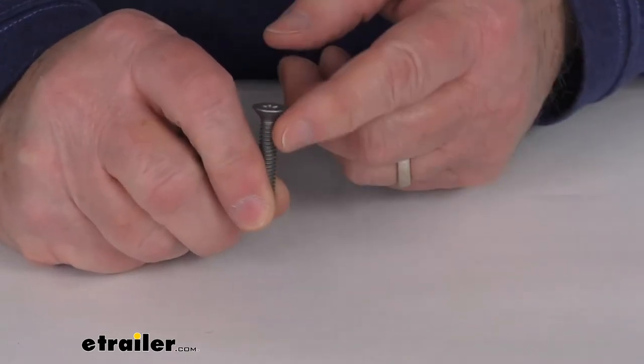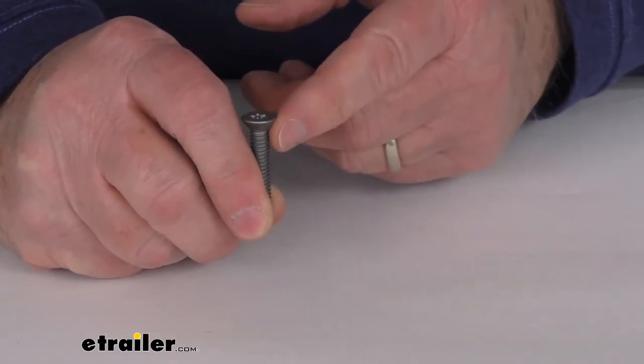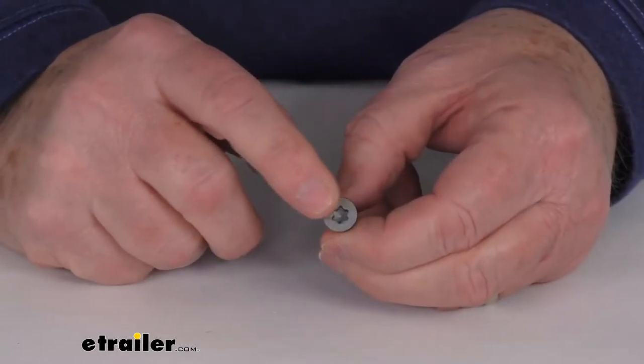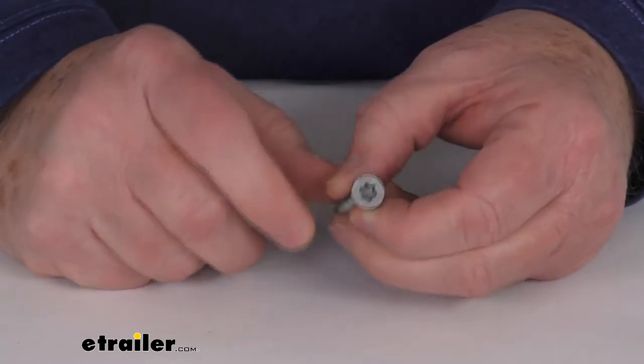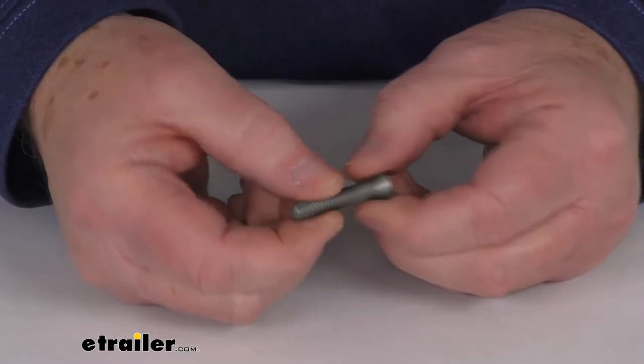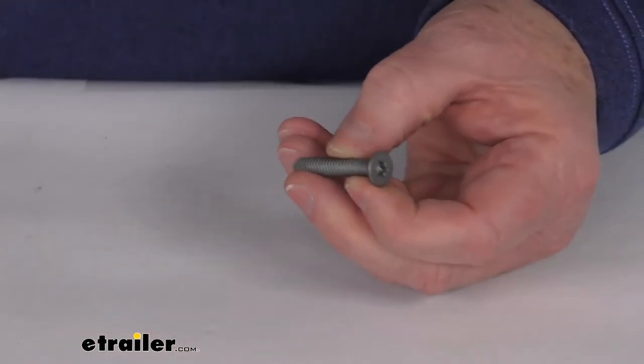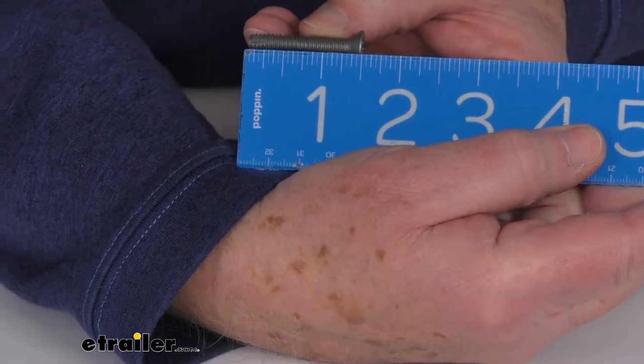If you notice, it has the tapered flat head to it which will sit flush to the surface when installed. The Torx head size on this is a T30. The diameter of the screw is a quarter inch and the length is one and a half inches long.